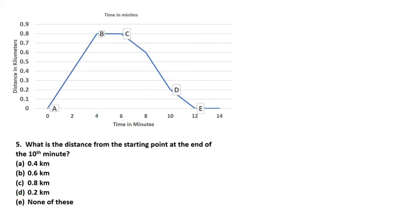Next question: what is the distance from the starting point at the end of the 10th minute? At the 10th minute the cyclist is at point D, and that distance is 0.2 km. So option D, 0.2 kilometer, is the correct answer. These types of questions can be easily solved by reading directly from the graph without consuming much time.